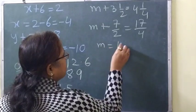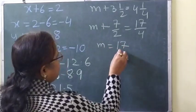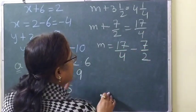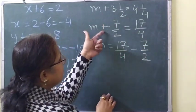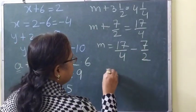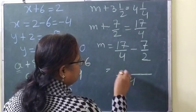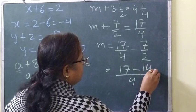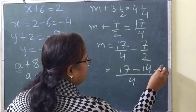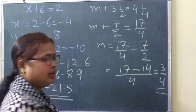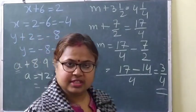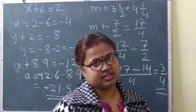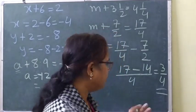So m equals 17 by 4 minus 14 by 4, which gives 3 by 4. The answer is 3 by 4. In simple language — side changes, sign changes. Plus becomes minus when it crosses to the other side. I hope that is clear.